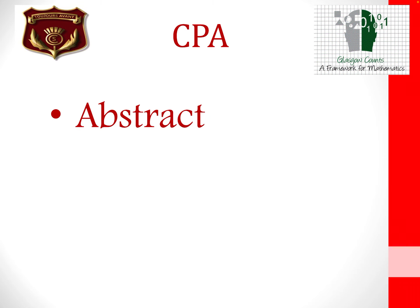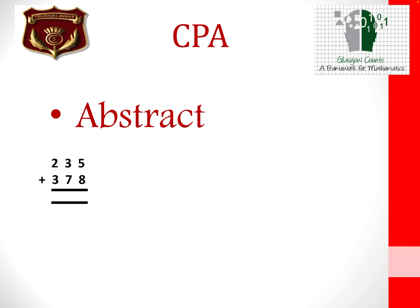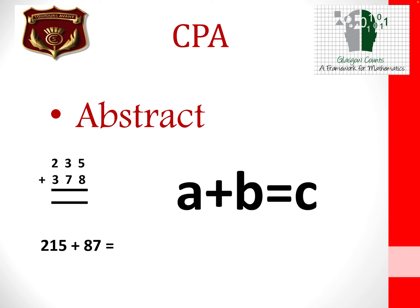The final stage in this approach is the abstract stage. Once children have demonstrated a secure understanding of a concept, they will then move on to this abstract stage. This is the more traditional method of solving sums and the one most people are more familiar with, such as the widely used method of house or chimney sums, horizontal sums and equations. We will however encourage children to regularly go back to using concrete resources and drawing pictorial representations alongside these abstract sums to ensure concepts are reinforced and understood.